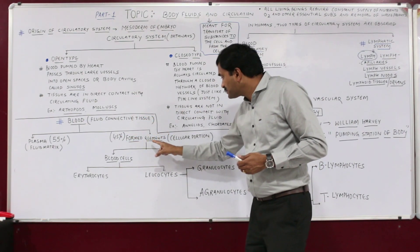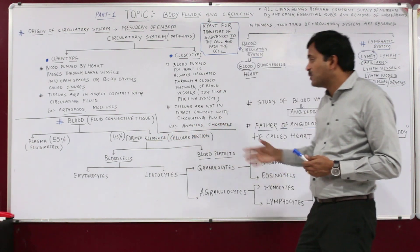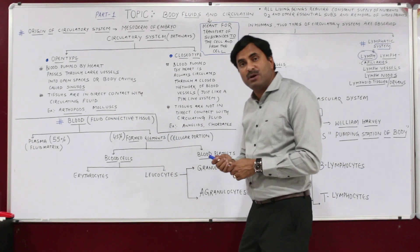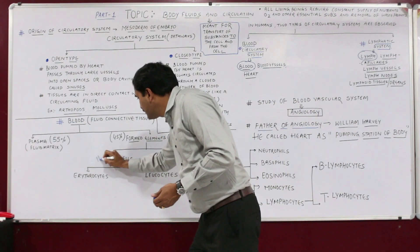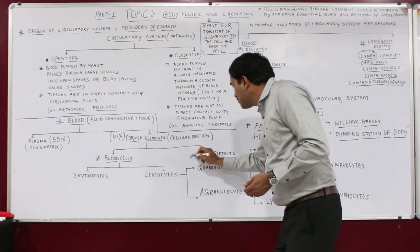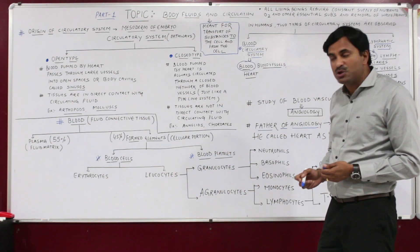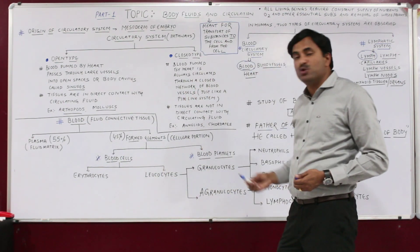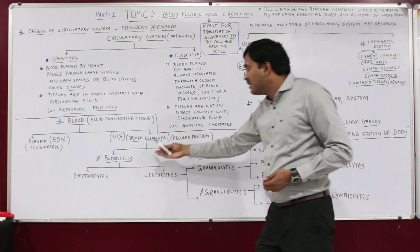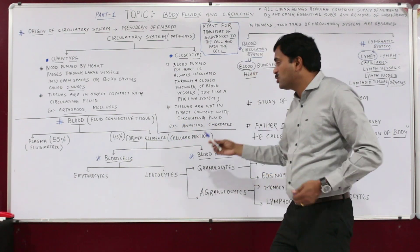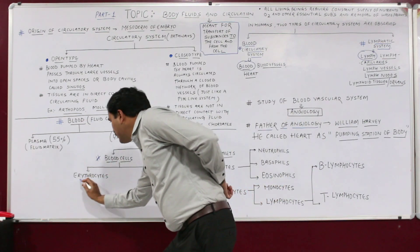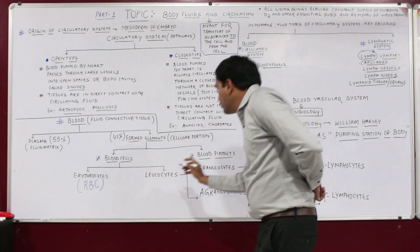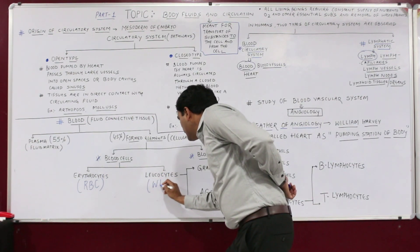The formed elements, or the cellular portion, are of two types: blood cells and blood platelets. The blood cells are of two types: erythrocytes and leukocytes. Erythrocytes are the RBCs and leukocytes are the WBCs.